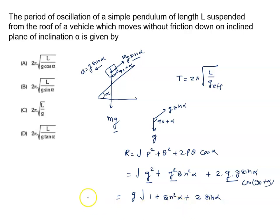What is the value of cos 90 plus alpha? This will be minus sin alpha. Finally, we are getting root 1 plus sin square alpha minus 2 sin square alpha, which means minus sin square alpha.